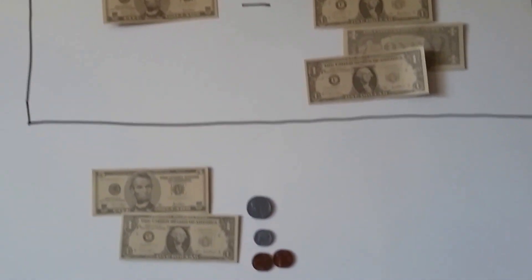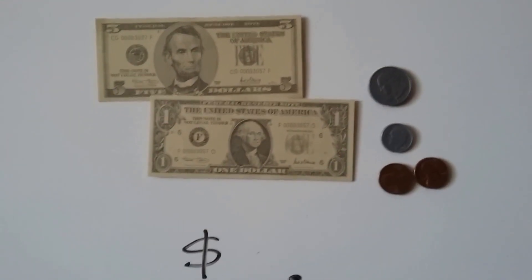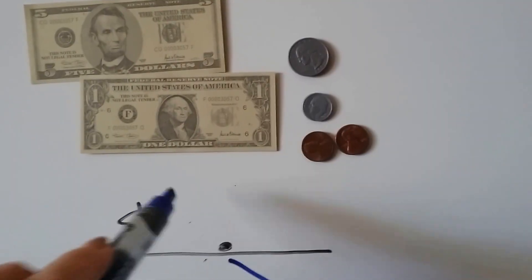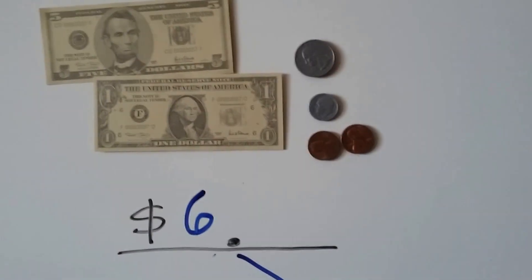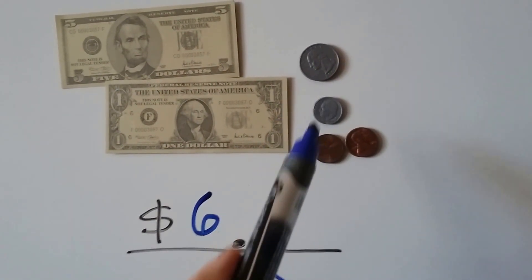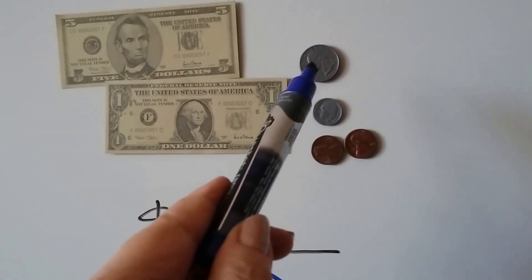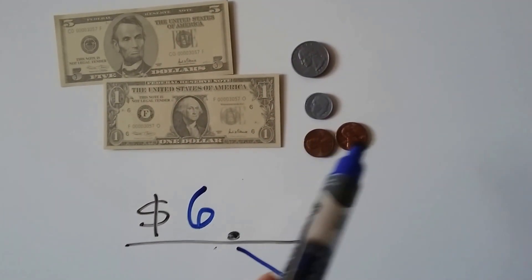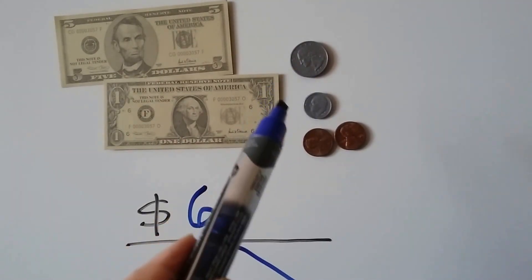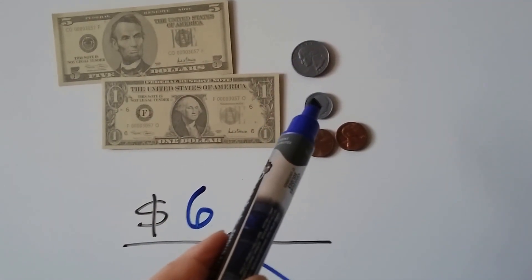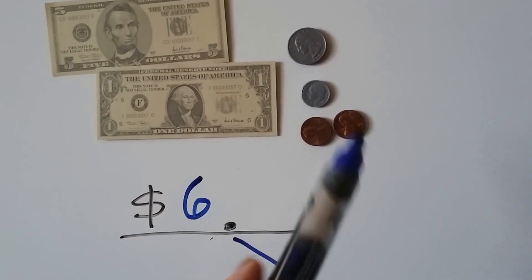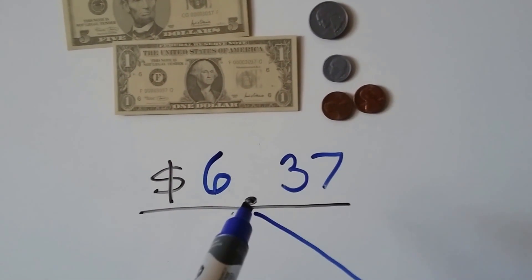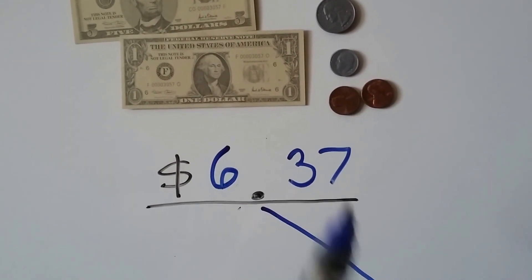So how much do we have here? I see a 5 dollar bill and a 1 dollar bill. So we add the bills first, that's 5, 6, and now I see a quarter and a dime and 2 pennies. So that quarter is 25, we have a dime that's 10, and 2 ones, don't we? 25, we can skip count 10 to 35, 36, 37. 6, and we've got our decimal point, 37.